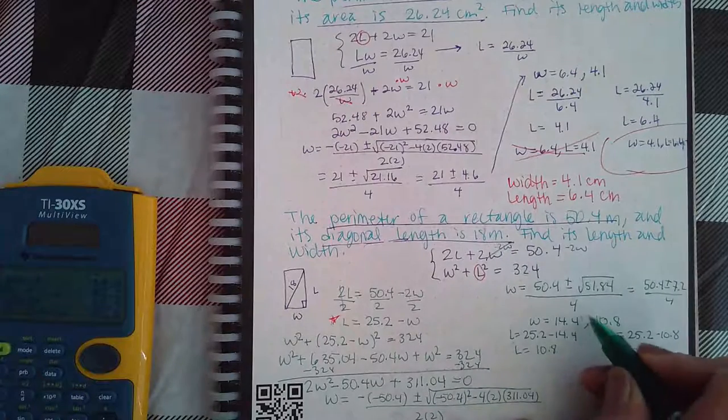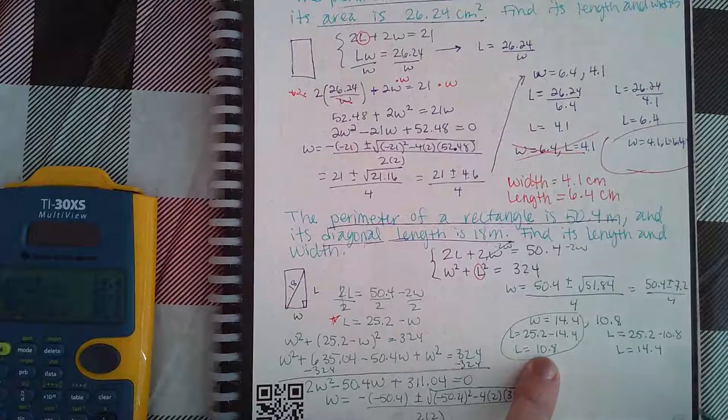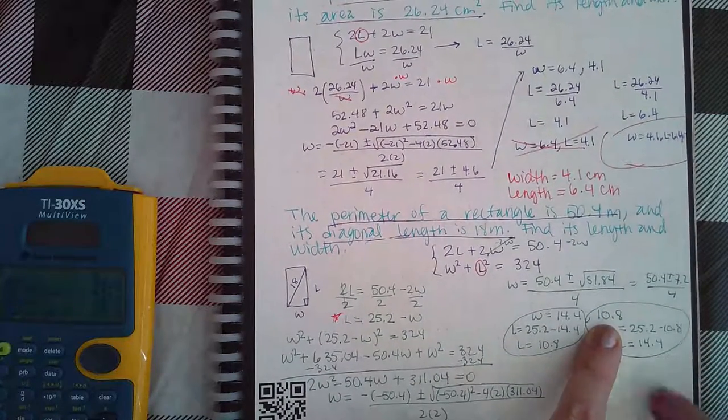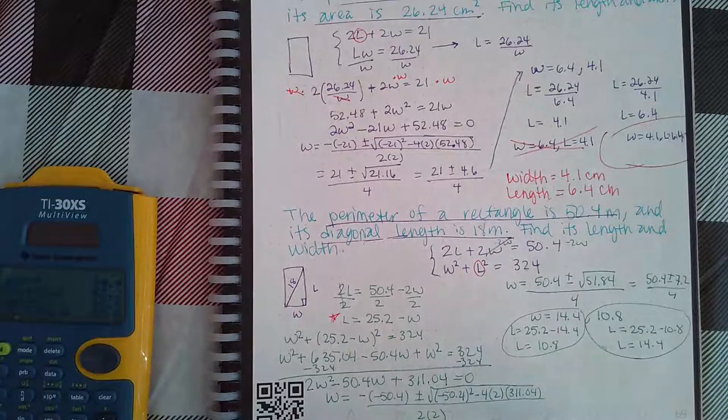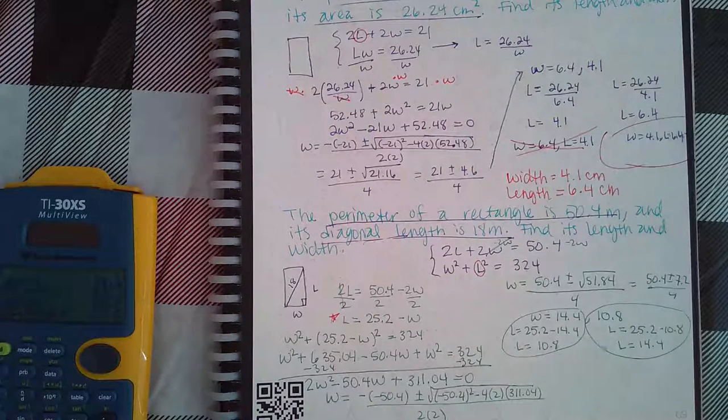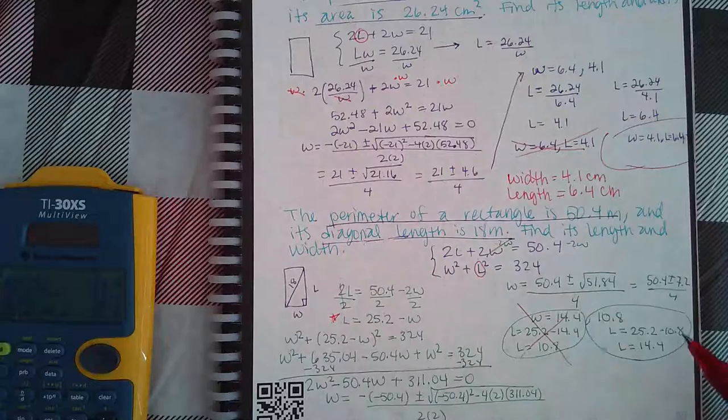So think about that again. Here you have a width of 14.4 and a length of 10.8, and here you have a width of 10.8 and a length of 14.4. Which one makes more sense, considering that width should be shorter and length should be longer? This is the one that makes sense. This one does not. The length must be longer than the width value.